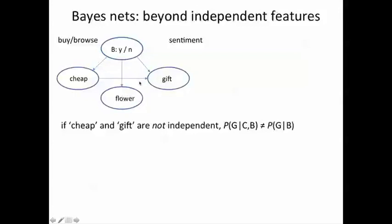In the language of Bayesian networks, what this means is to compute the a posteriori probability of a buy given any of these occurrences, our expansion needs to include the probability of a gift given c and b or alternatively the probability of cheap given g and b depending on the order in which we expand the joint probability of g, c and b. We've seen this in the last segment.